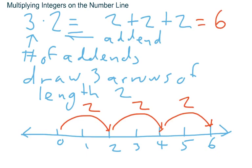Now that's a very simple example. You multiply two positive numbers and you get a positive answer. This same idea, though, will work with negative numbers.